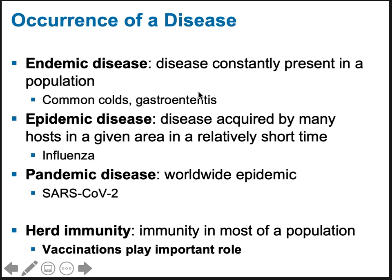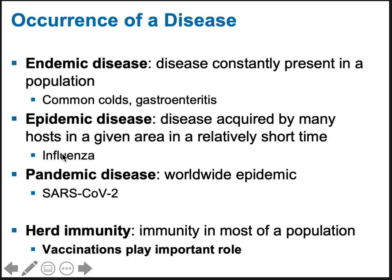Gastroenteritis is inflammation of any part of your digestive tract and the symptoms that come from that. An epidemic is when a lot of people in a particular area suddenly get a disease in a short amount of time — for example, influenza. A pandemic is an epidemic on a worldwide scale. Influenza can also be a pandemic, so it can fall under either category.